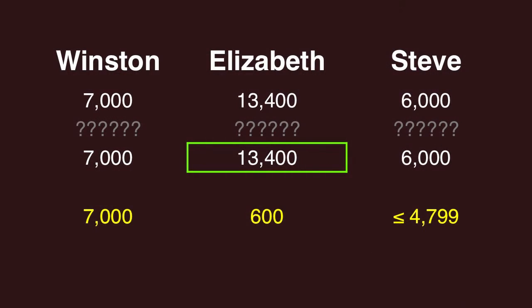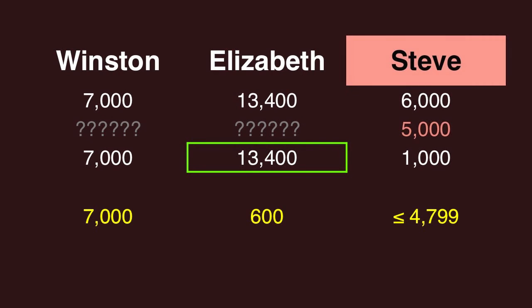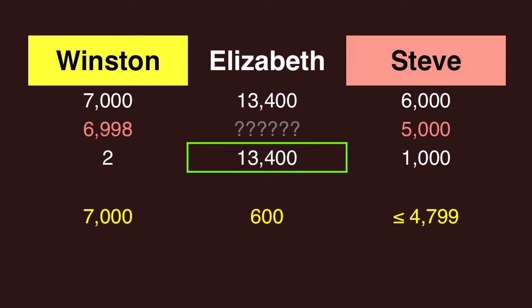As for how our players actually did, I thought this was a tricky clue, and it looks like our players agreed. Steve missed and wagered 5,000, a little bit too much. Winston also missed, wagered everything but $2.